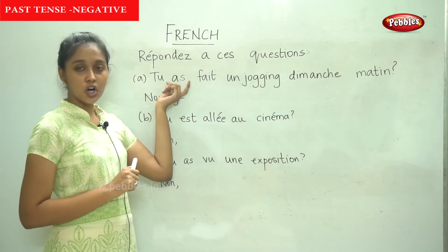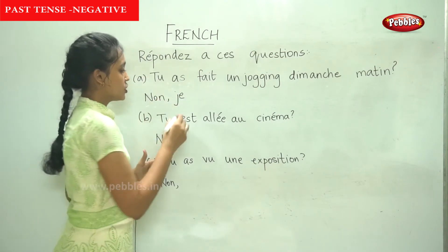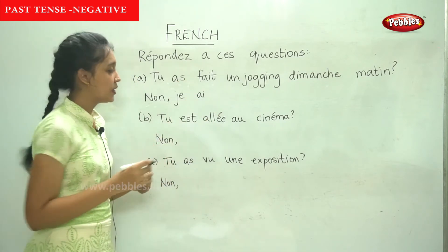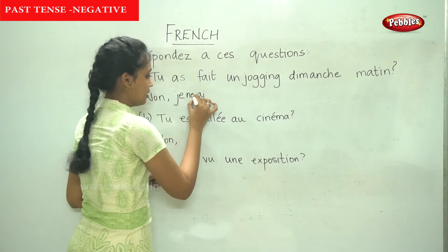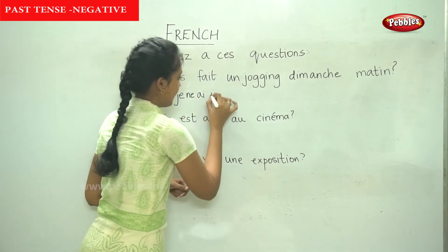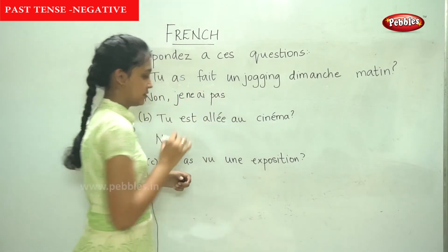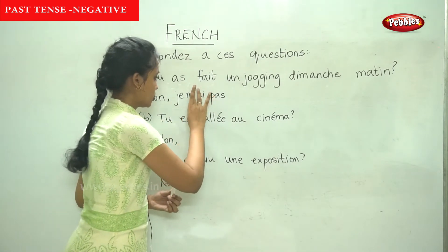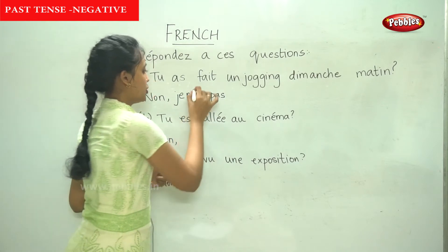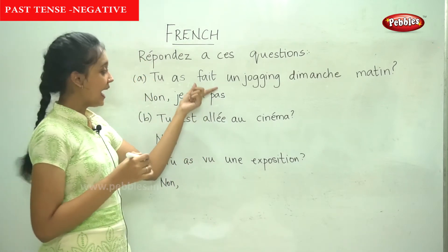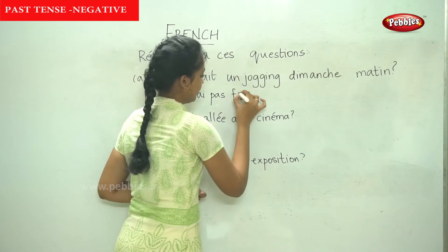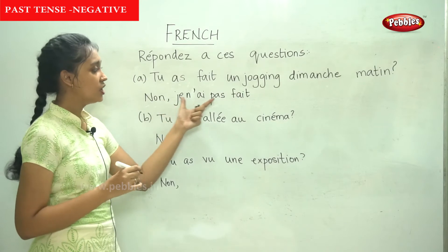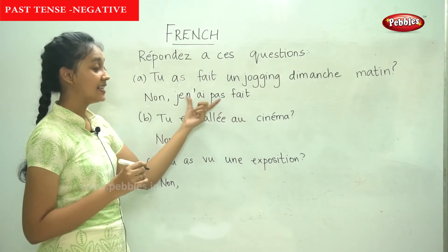It is applied to the auxiliary verb. So for 'je', the avoir auxiliary is 'ai'. Now we add ne before and pas after. There is a vowel clash here, so we say: je n'ai pas — and don't forget to add the participle after that. Je n'ai pas fait — meaning 'I did not do'. It is a past participle.